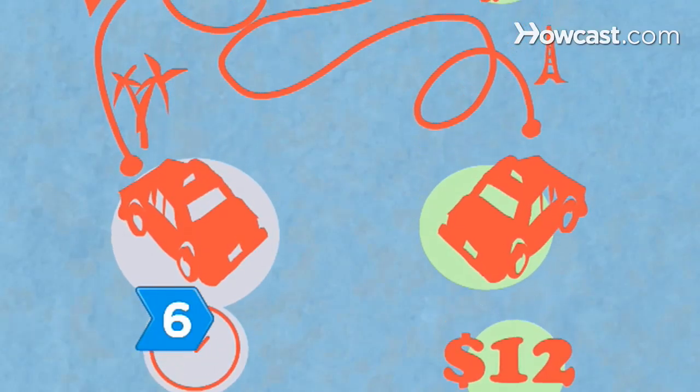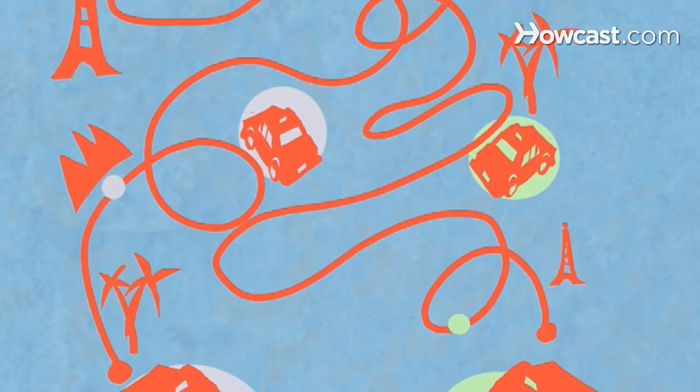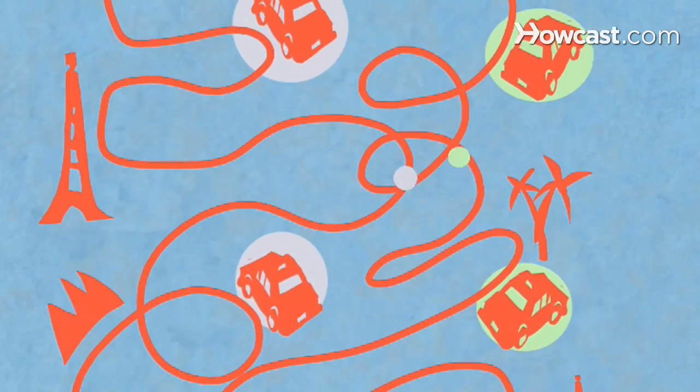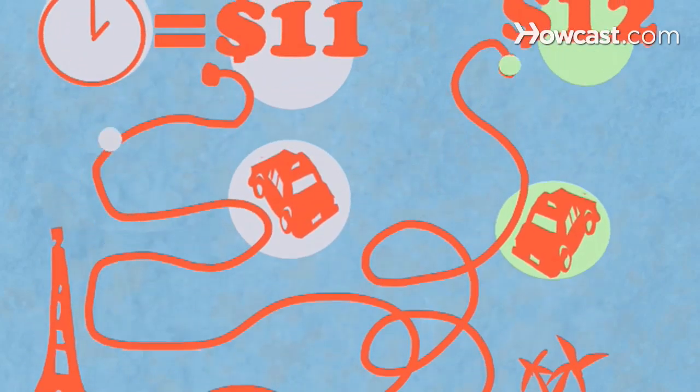Step 6: Be suspicious of metered cabs that offer a flat rate. Odds are, the price they're quoting is much higher than it would be if the meter was turned on. Make sure the driver turns on the meter when the ride begins. If a driver says his meter isn't working, find another cab.